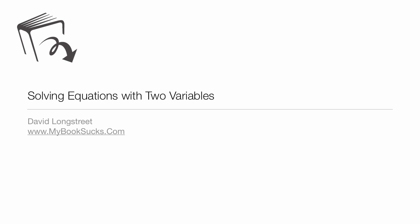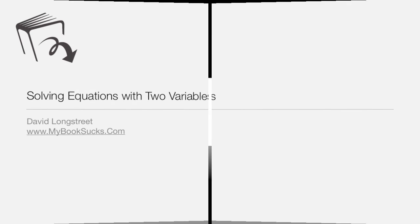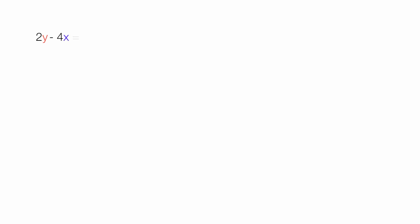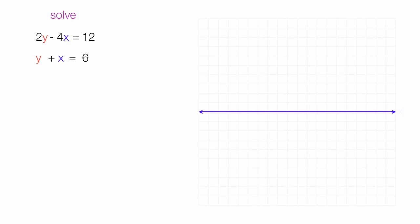In this tutorial, I'm going to discuss solving equations with two variables. Let's imagine you have to solve these two equations. When you solve two equations with two variables, what you're doing is figuring out where those two lines cross. Let me show you that right now.